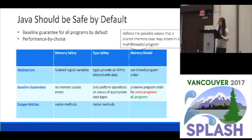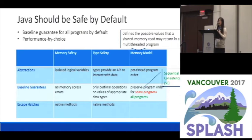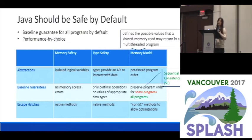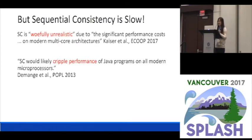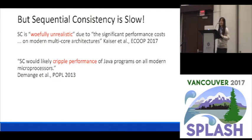There is a formal concept for talking about the behaviors of memory reads and writes, and it's called memory models. The memory model that can preserve program order for all programs is called sequential consistency. Of course, if you still want some escape hatches, you should allow programmers to write some non-SC code to allow reordering of instructions to get better performance through optimization. But Java is not doing this today. Why? Because people believe that sequential consistency is too costly. Some recent papers from top conferences say that SC is woefully unrealistic or that SC will cripple the performance of Java programs on all modern microprocessors. But is that the case? Let's actually find out.